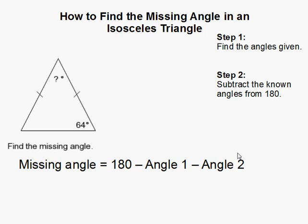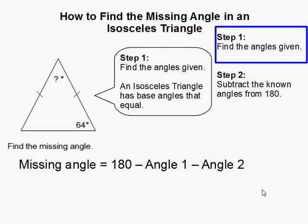How to find the missing angle in an isosceles triangle. Alright, the first thing we need to do is find the angles that are given.